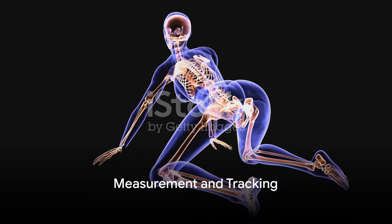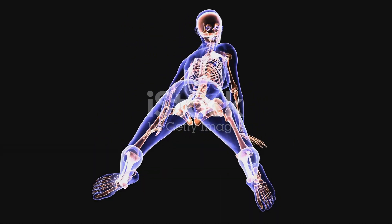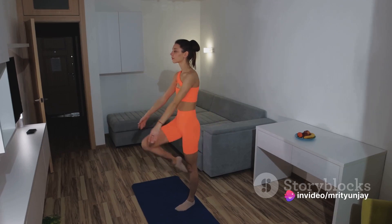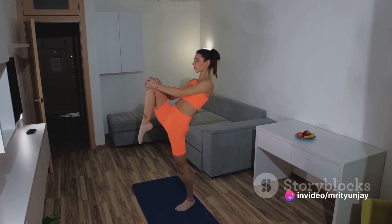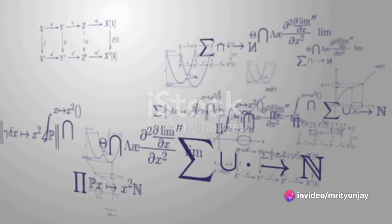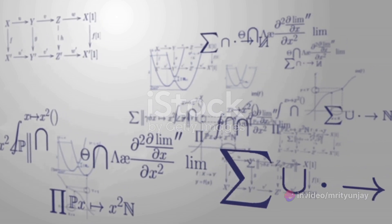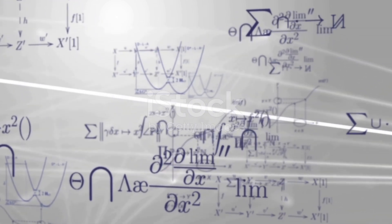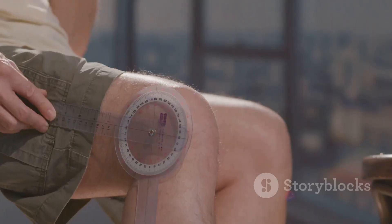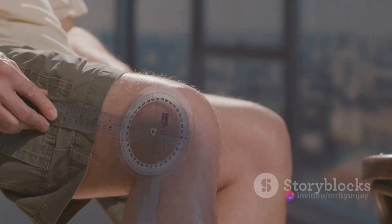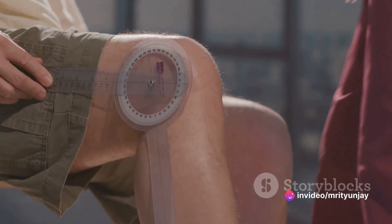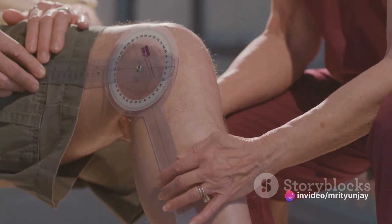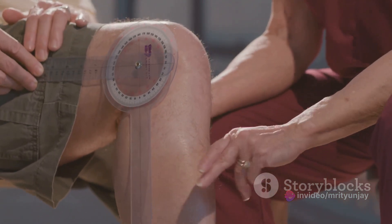To sum things up, our bodies move in complex ways and we use terms like flexion, extension, abduction, adduction, medial rotation, and lateral rotation to describe these movements. Range of motion, linear distance, velocity, and acceleration are all crucial components in understanding these movements. Tools like goniometers, electrogoniometers, and three-dimensional motion analysis help us measure and track these movements over time.